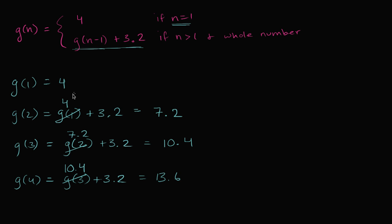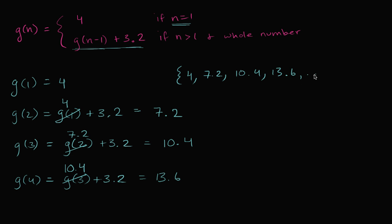And so what you have here is actually quite interesting. You can think of this function g as defining a sequence, since it's defined over all positive integers. And we see what the sequence is: the first term is four, second term is 7.2, next term is 10.4, next term is 13.6, and it could keep going on and on.